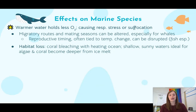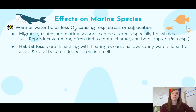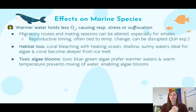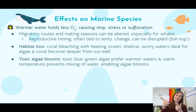We also get habitat loss — for example, coral bleaching with heating oceans, which I'll talk about in a couple of slides. We also start getting shallow, sunny waters that are ideal for algae and coral becoming deeper due to ice melt, changing habitats from what they were before all this warming. Ocean warming also leads to more toxic algae blooms. Blue-green algae prefers warmer waters and can bloom in warm temperatures, similar to what we've learned about from eutrophication with excess nitrogen and phosphorus.